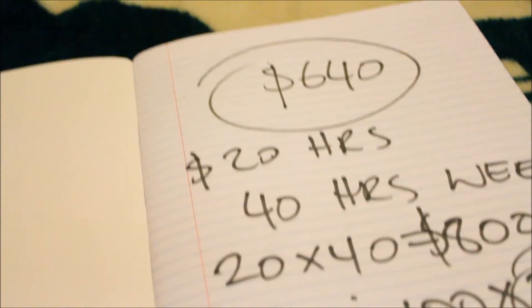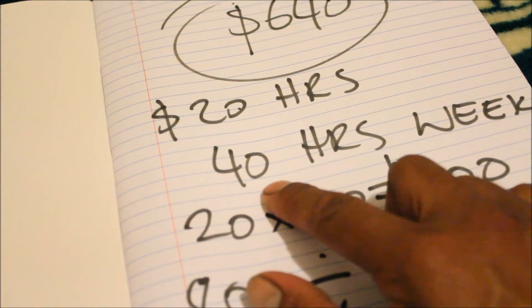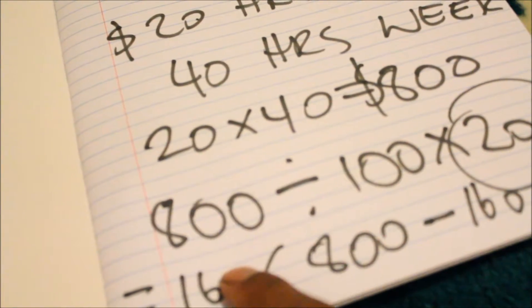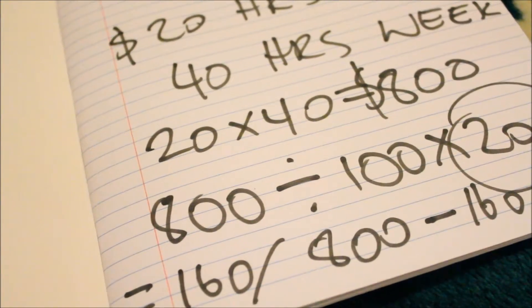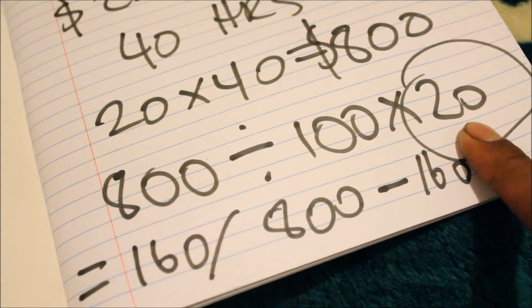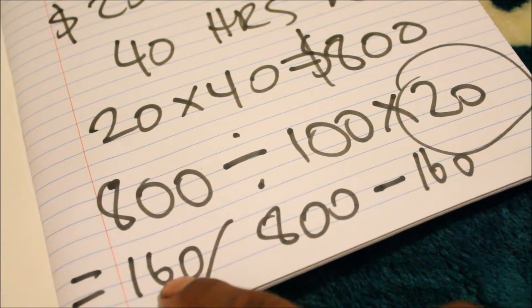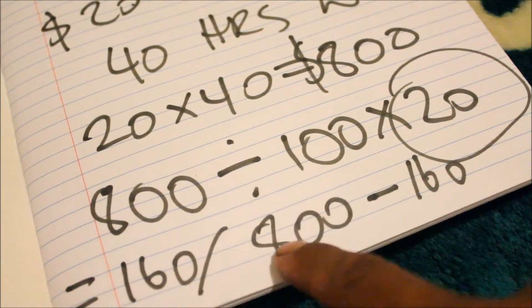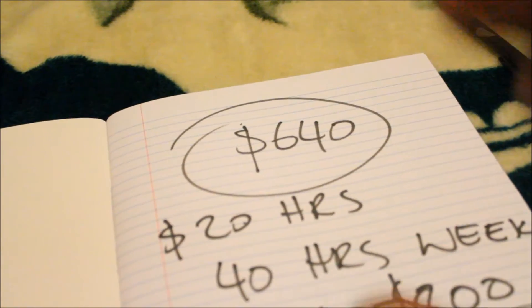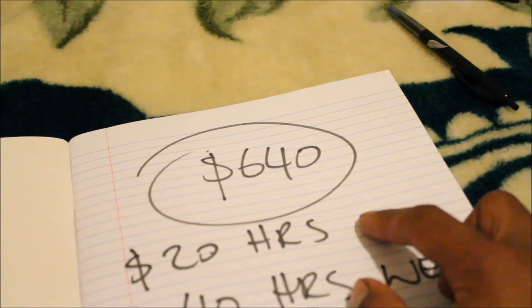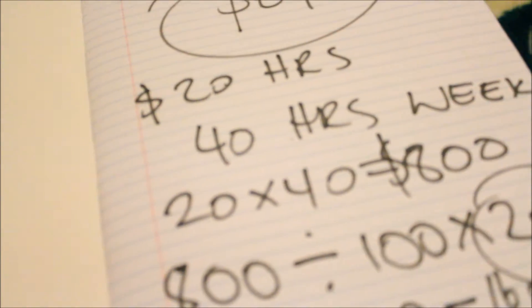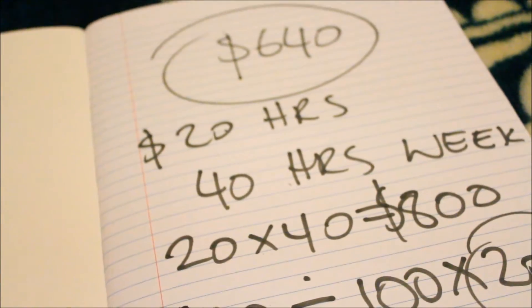So the calculation is: your rate times how many hours you work a week equals $800. Then to work out the tax: 800 divided by 100, times the tax percentage of your country — whatever that equals — and then 800 minus that amount brings you to $640. That's how much you roughly get after tax.